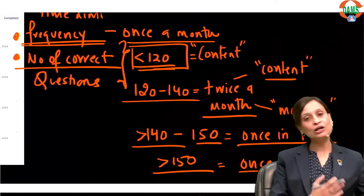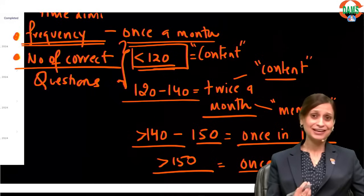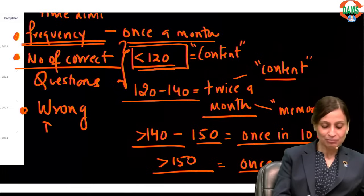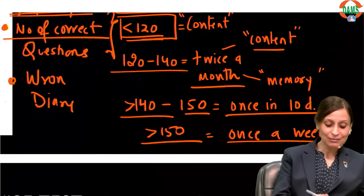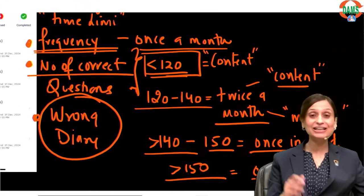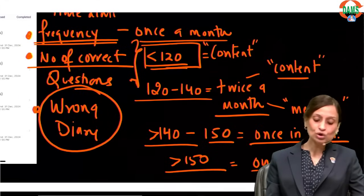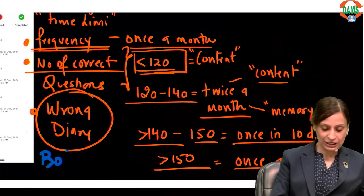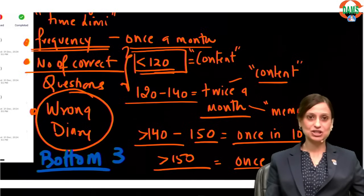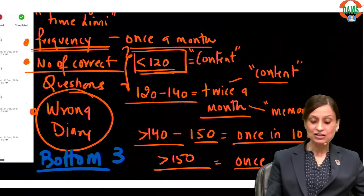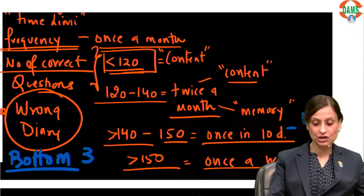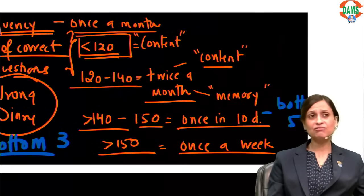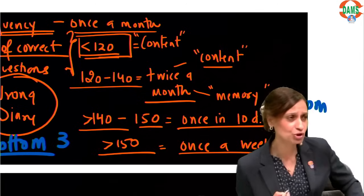To build content and increase correct questions, definitely follow the wrong diary. For grand tests covering 19 subjects, don't try to work on all 19 at once. Until you reach 140, focus only on your bottom 3 subjects. Once you cross 140, focus on bottom 5. Once you cross 150, you can work on the bottom 10 subjects simultaneously.